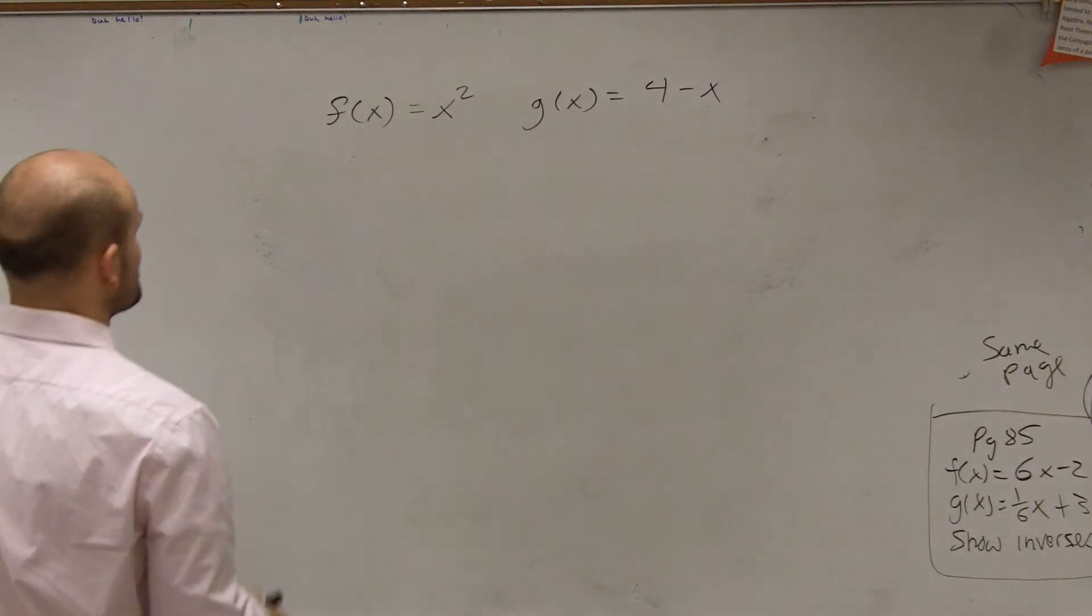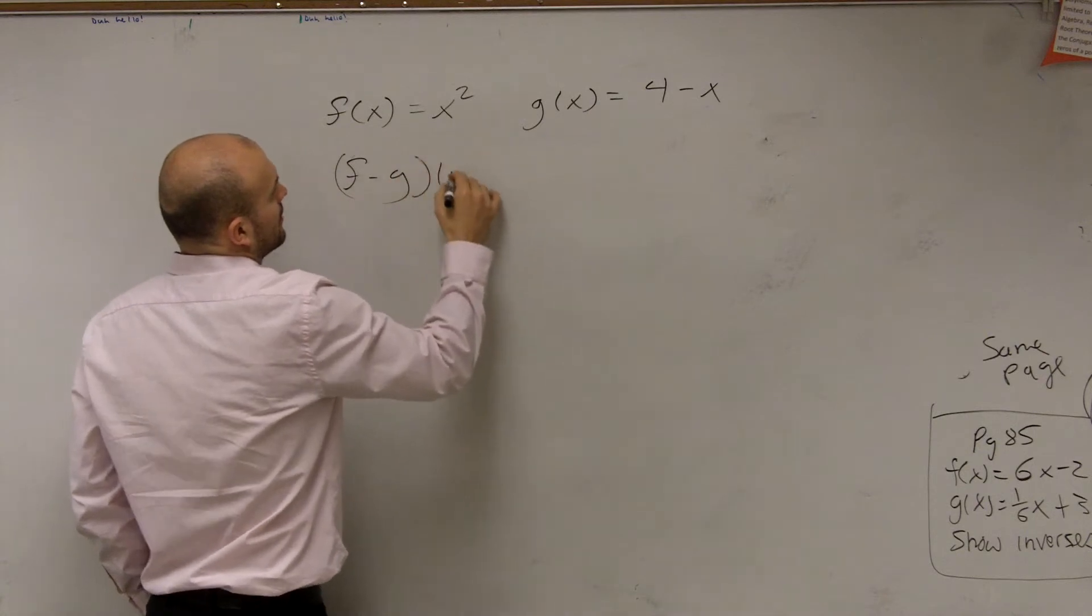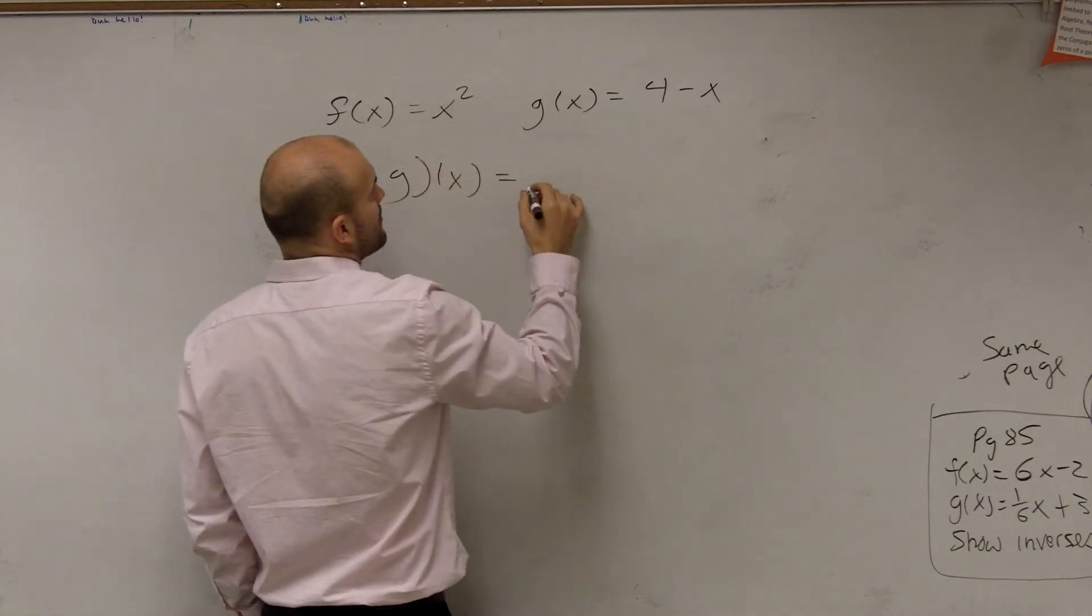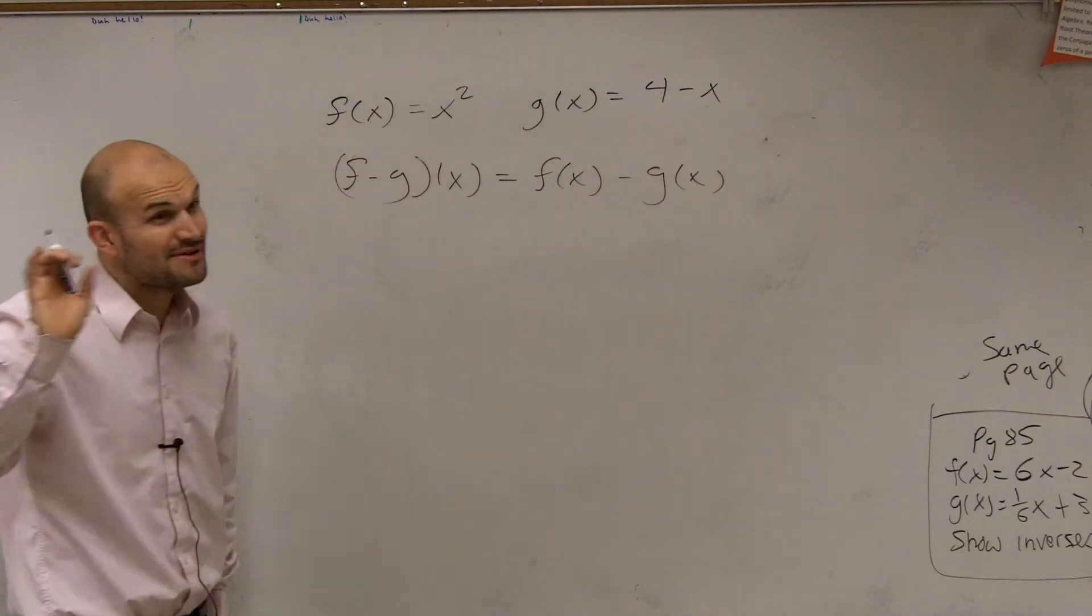All right, so now the next one says subtraction. So that means I want to write f minus g of x equals f of x minus g of x. Now this one's going to be very important.